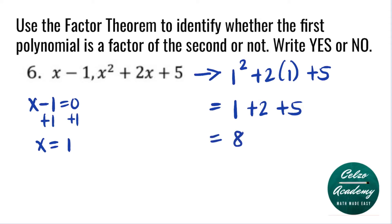1 plus 2 plus 5 is equal to 8. According to the factor theorem, if the value is equal to 0, that means the binomial is a factor. So for question number 6, x minus 1 is not a factor.